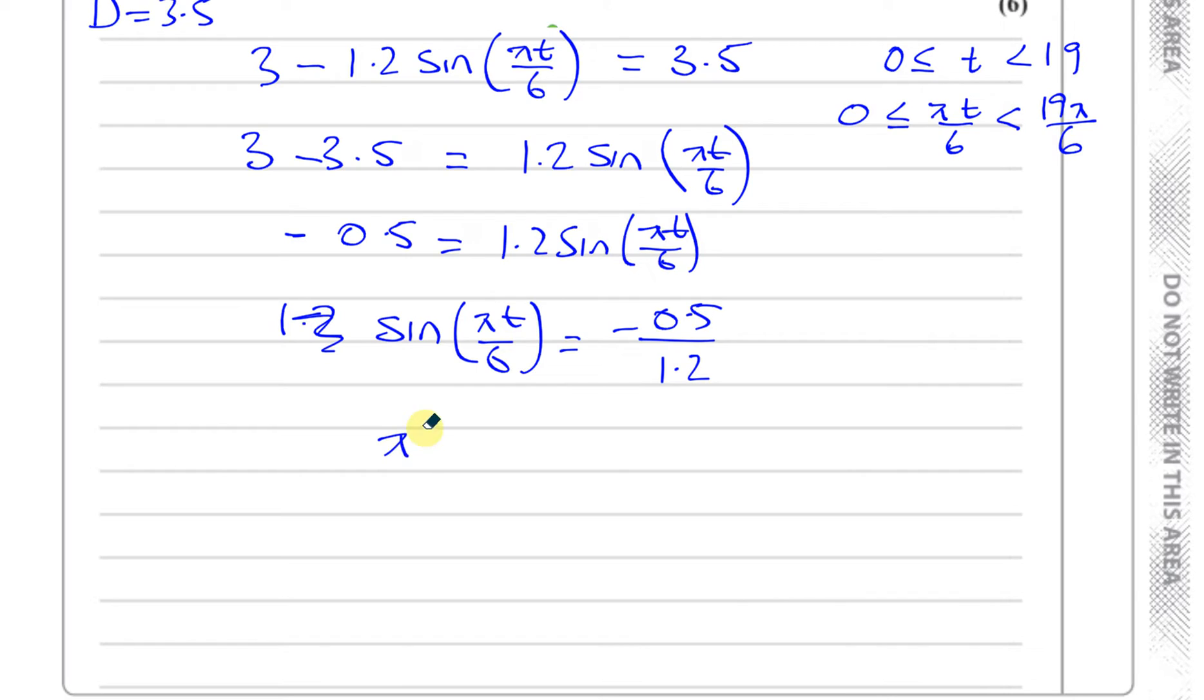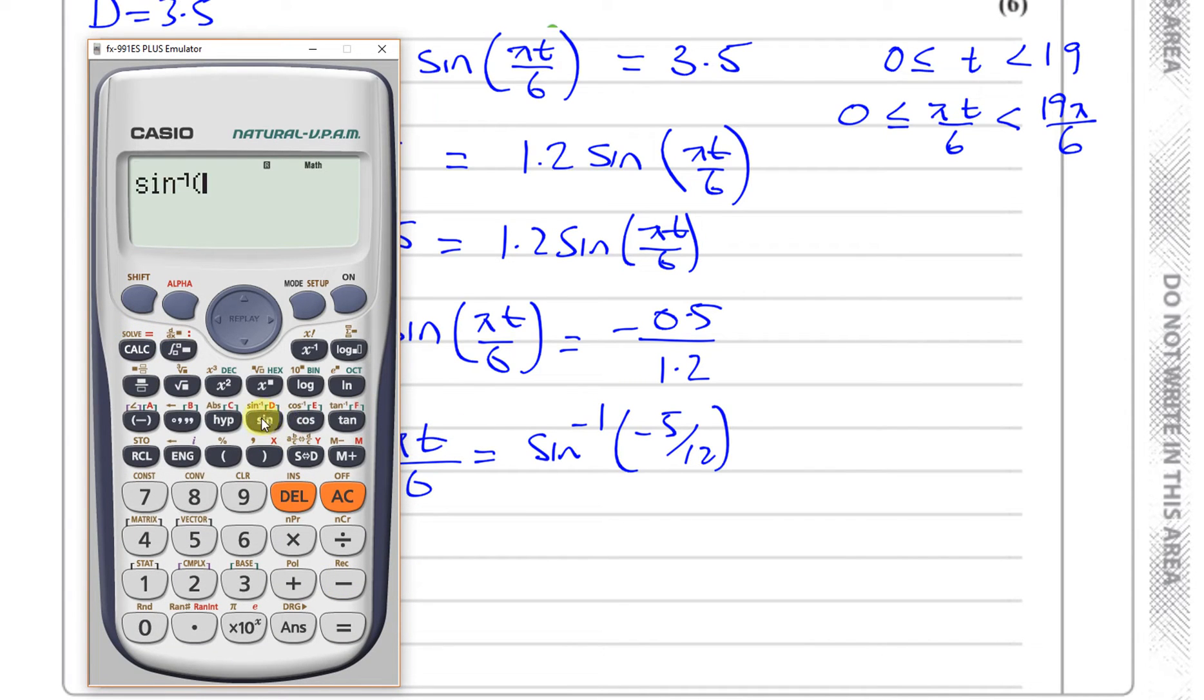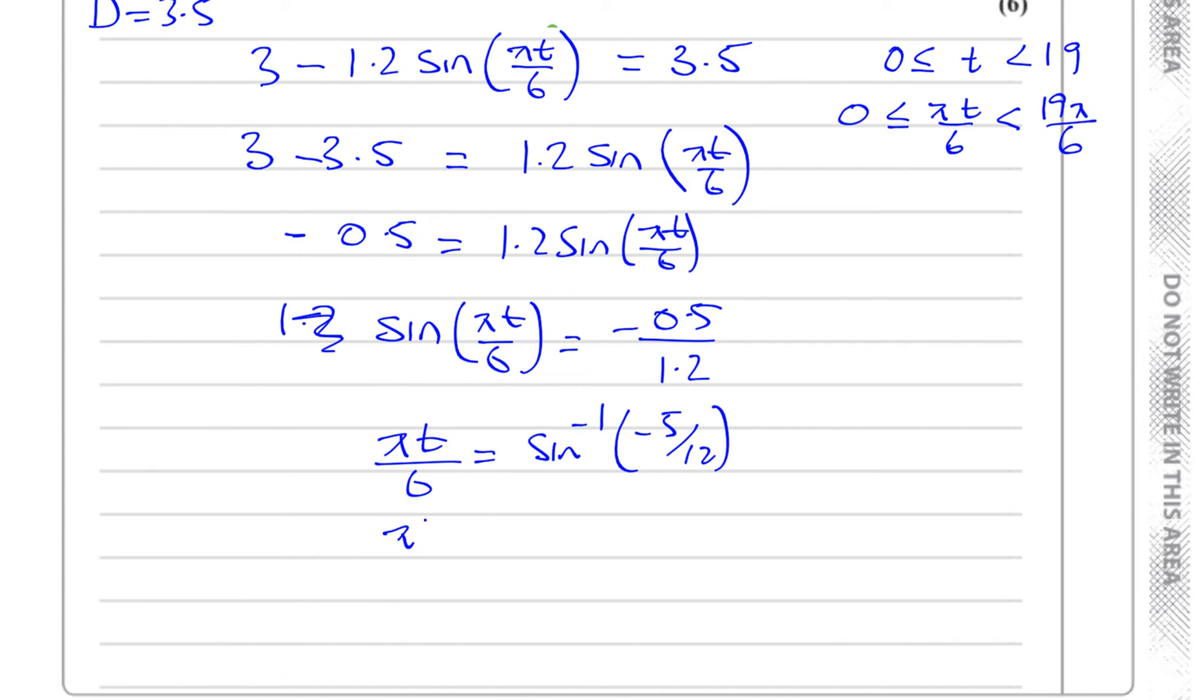We can say that the sine of pi t over 6 equals minus 0.5 divided by 1.2. So we can say pi t over 6 equals the inverse sine of basically minus 5 over 12. So let's see what that gives us. Inverse sine of minus 5 over 12.